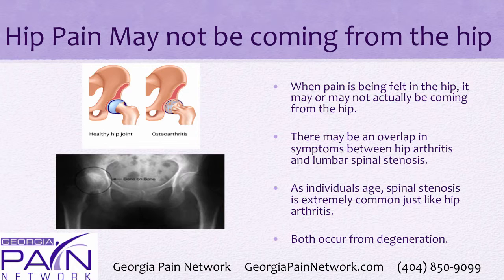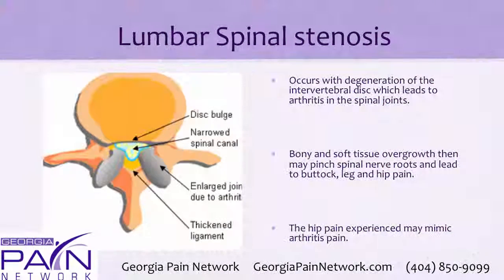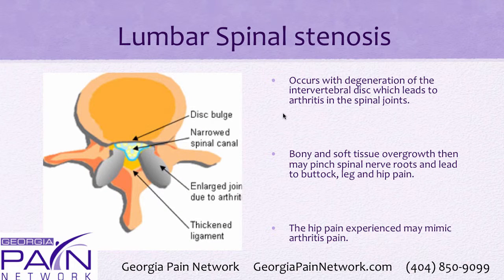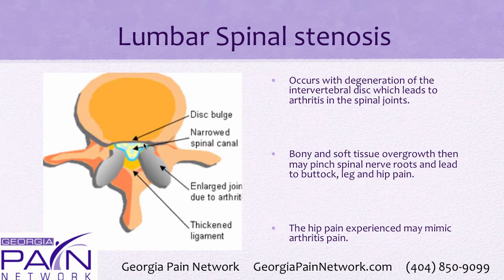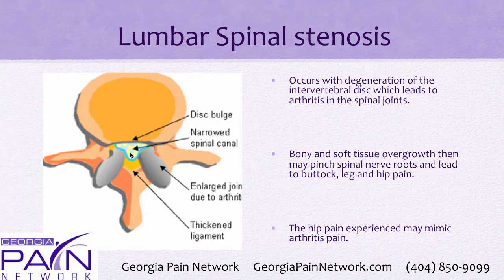As individuals age, spinal stenosis is very common in the lumbar spine, just like arthritis is in the hip. Both occur due to degeneration. Now, lumbar spinal stenosis — you can see in the cartoon here — this is the vertebral disc, this is the spinal canal where the spinal cord goes through, and these are joints surrounding the spine. Normally you see an ellipse, but with degeneration and overgrowth of bone and soft tissue, you start to get more of a triangular appearance, which is called spinal stenosis.